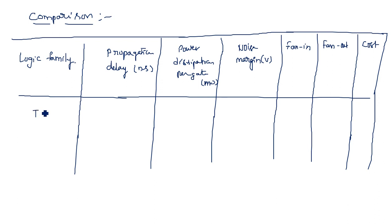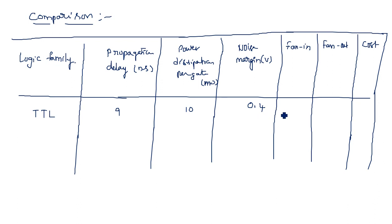The TTL logic family has a propagation delay of 9 nanoseconds, power dissipation of 10 milliwatts, noise margin of 0.4 volts, fan-in of 8, fan-out of 10, and the cost is low.